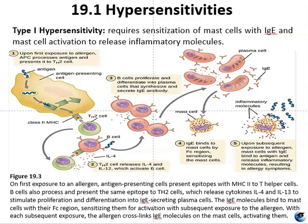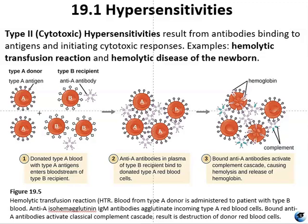Figure 19.1 is a schematic of type 1 hypersensitivity. On the first exposure, antigen presenting cells present epitopes with MHC class 2 to helper T cells. These cells also process and present the same epitope to TH2 cells, which release cytokines that stimulate proliferation into IgE-secreting plasma cells. The IgE molecules bind to mast cells, sensitizing them for activation upon subsequent exposure.